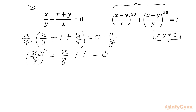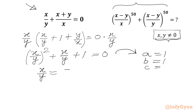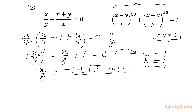We can use the quadratic formula for the value of x/y directly. Here a is the coefficient of (x/y)² which is 1, b is the coefficient of x/y which is also 1, and c is the constant 1. So we get minus 1 plus or minus square root of (1 minus 4) over 2, which gives minus 1 plus or minus square root of minus 3 over 2.